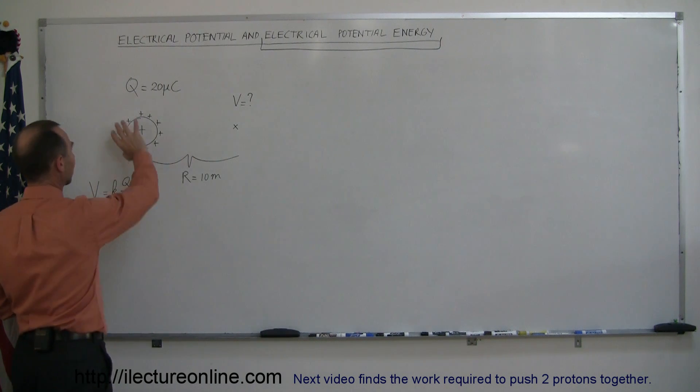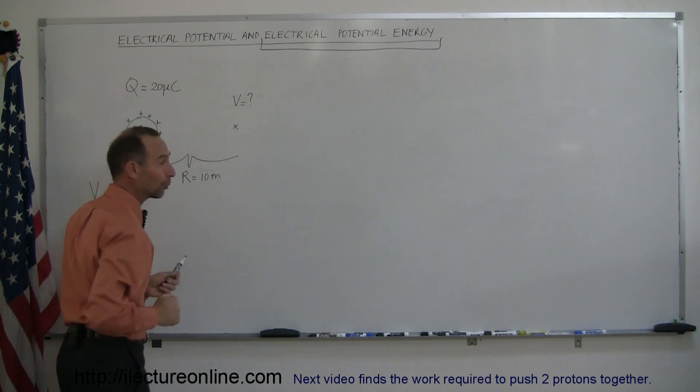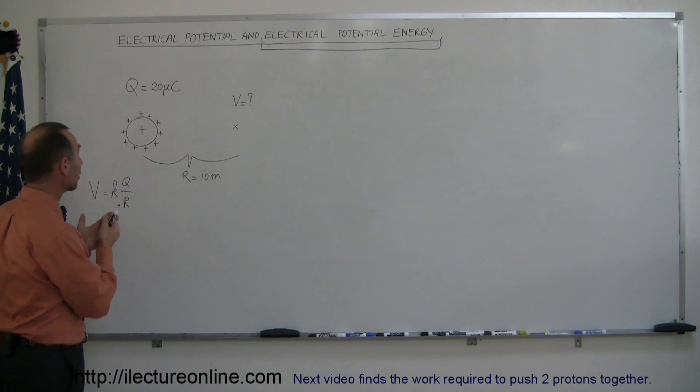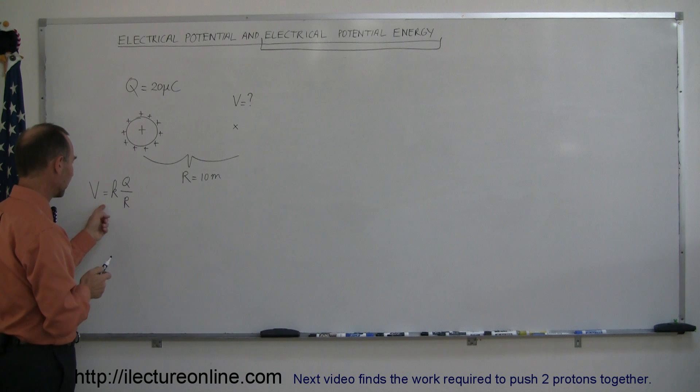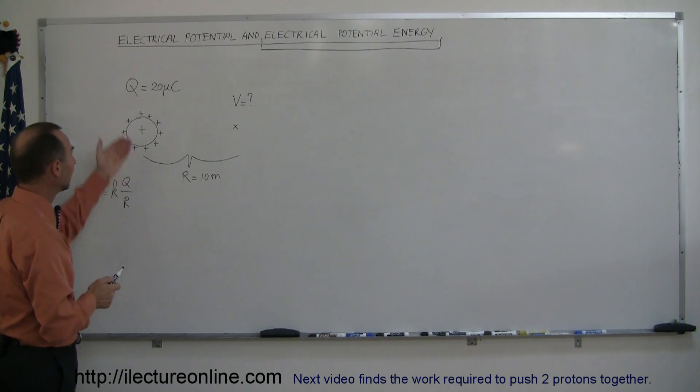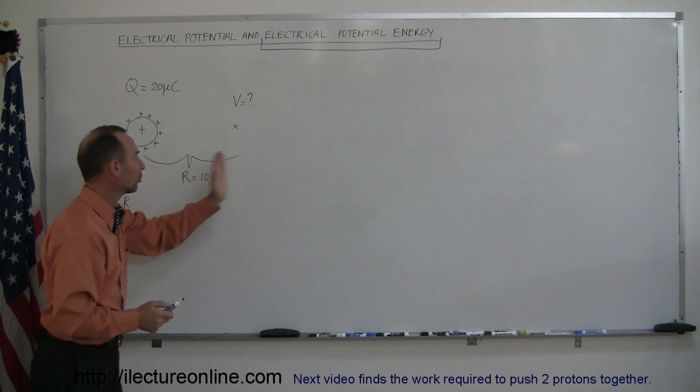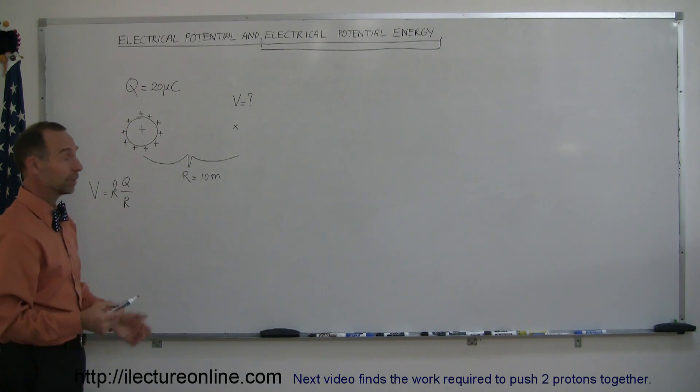If the object is relatively small with the charge distributed over it, and the distance away from the object is sufficiently far away, we can look at this as a point object. So the potential is equal to KQ over R. If the charge on the object is 20 microcoulombs and we're 10 meters away from that charge, what will be the potential?